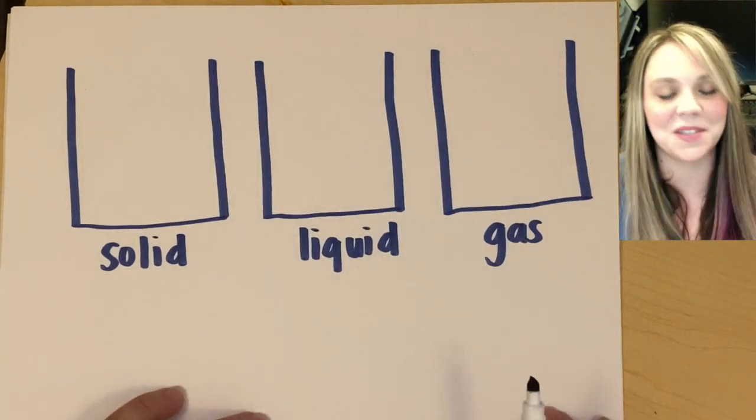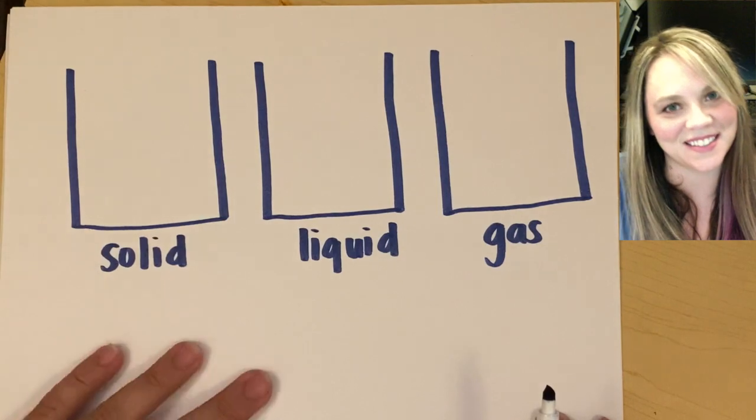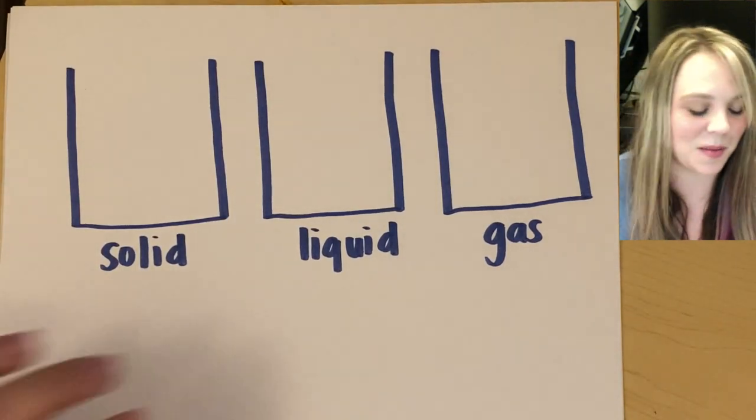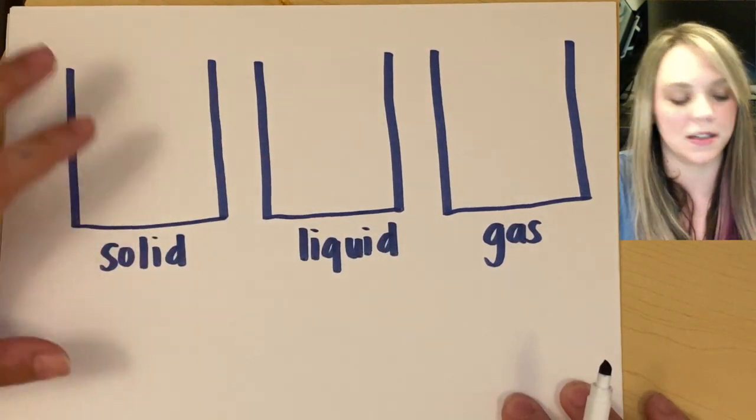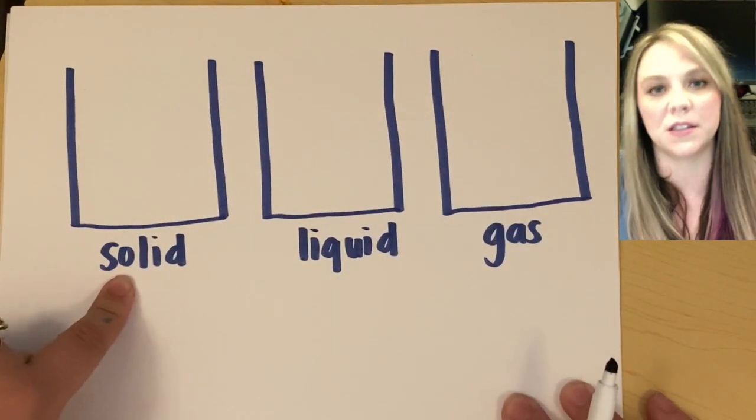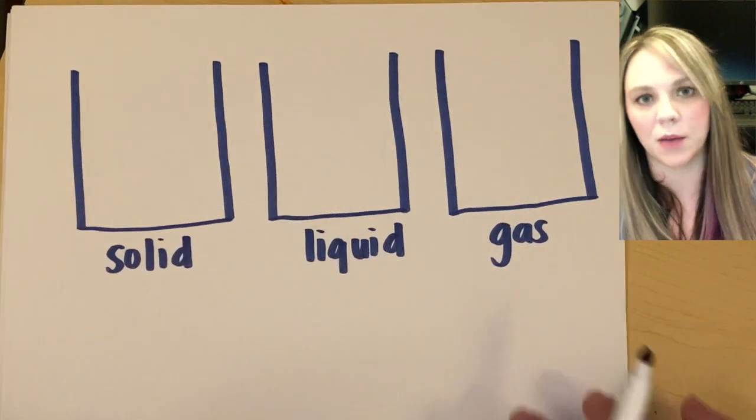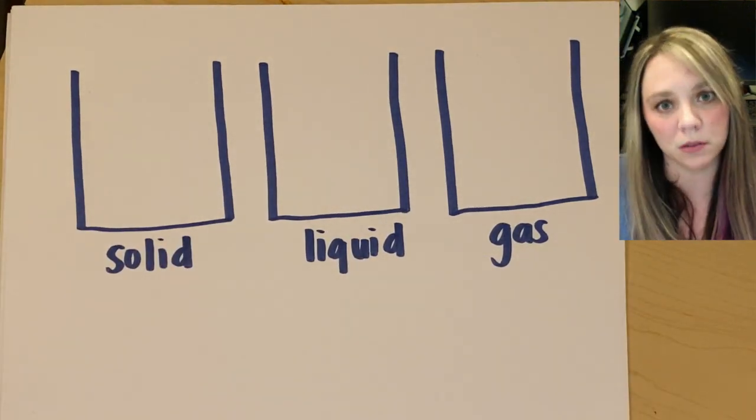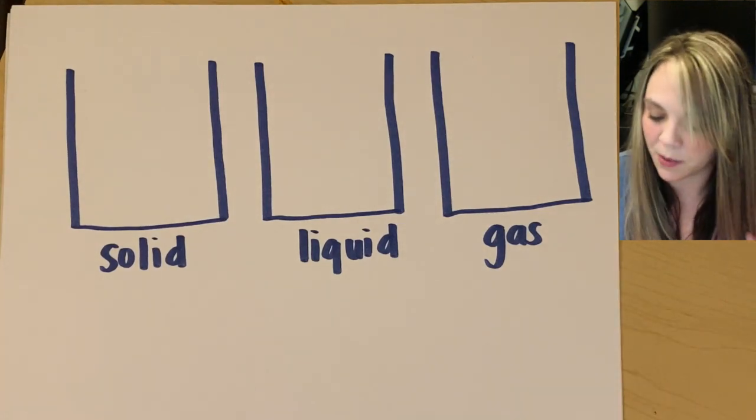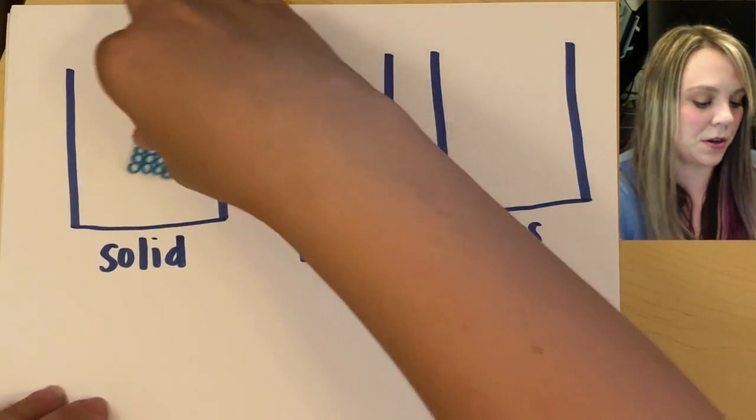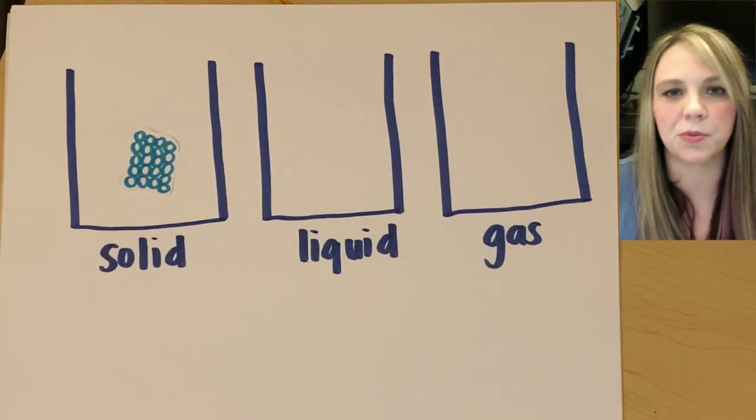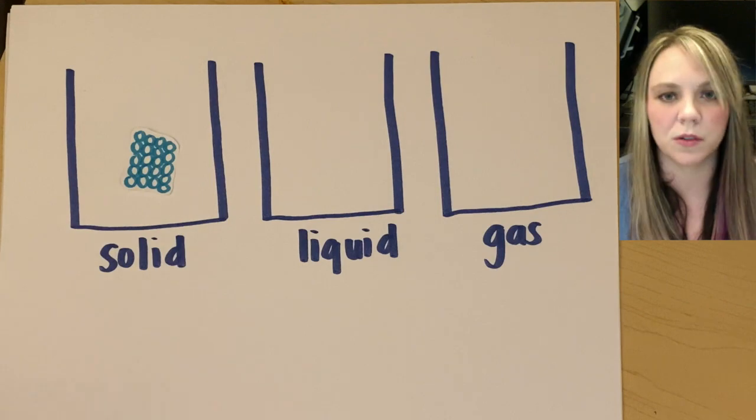All right, you are going to get used to my beautiful drawings here. But hopefully they help. So what we're actually going to be looking at is, you know, imagine these are three different beakers, and we're going to fill them with a solid, a liquid, and a gas. And we're going to look at a particle model of solid, liquid, and gases. When we talk about particle models, that means you are actually drawing out particles, right? You're drawing out like circles represent atoms. We'll do more of this later.